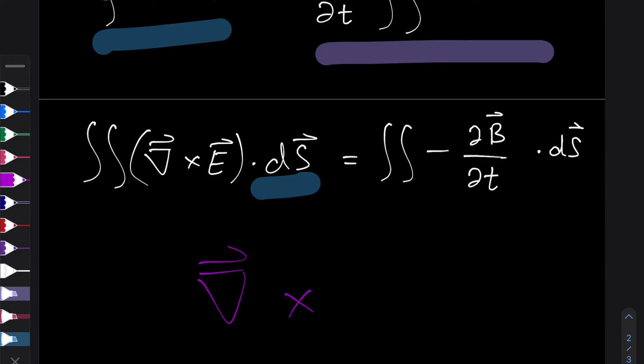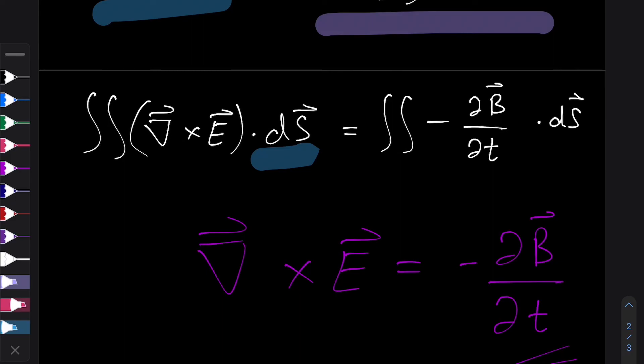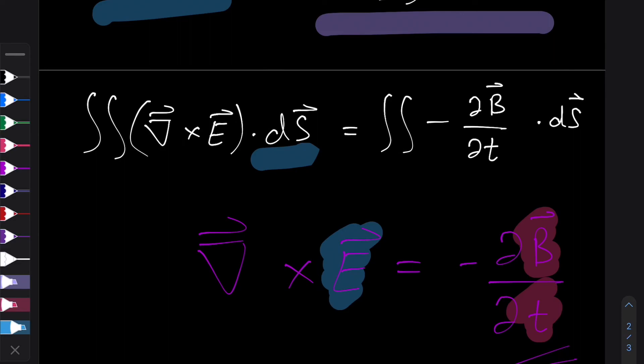The curl of the electric field is equal to the negative rate of change of the magnetic field. And this is really interesting, because it tells us that whenever we have a magnetic field changing with time, this induces an electric field around it,